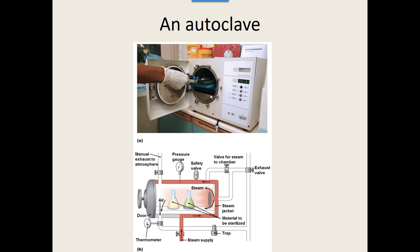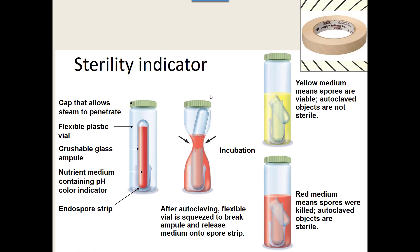To ensure the autoclave actually worked, there has to be some type of indicator, because you don't know if it reached the correct temperature for the correct amount of time. There are vials with an endospore strip that go in with what you're autoclaving. Getting up to temperature and pressure, maintaining it for 15 minutes, and cooling back down is usually about a two-hour process. If the fluid in the vial is yellow, the spores are viable — meaning the autoclave didn't reach the correct temperature or time. If it's red, everything worked.